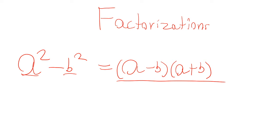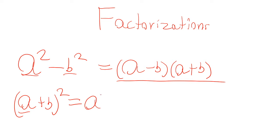Now, for the product of binomials: a plus b squared — this is expansion. When we're squaring a binomial, you square the first term, then you take the product of the terms. The product of a and b is ab, and you multiply it by 2 to get 2ab, then you square the last term b. So we get a squared plus 2ab plus b squared.